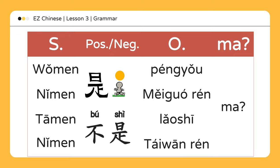吗 can be added to the end of a positive 是 or negative 不是 sentence to create a question. 我们是朋友吗? Are we friends? 你们是美国人吗? Are you Americans? 他们不是老师吗? Aren't they teachers? 你们不是台湾人吗? Aren't you Taiwanese?